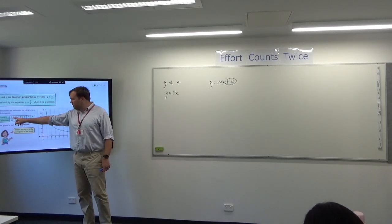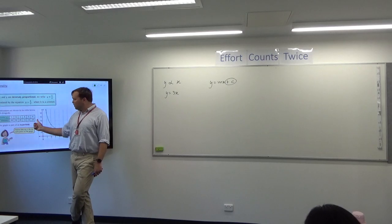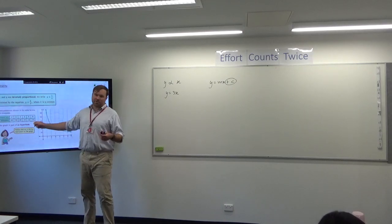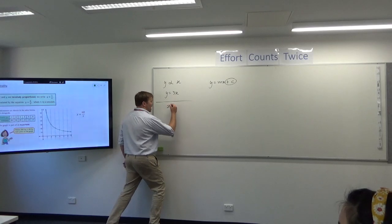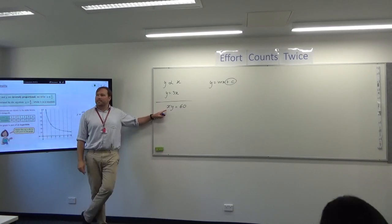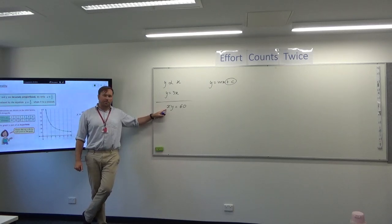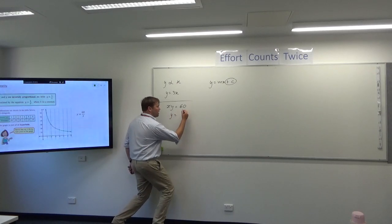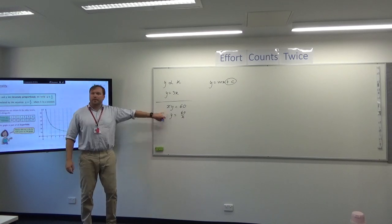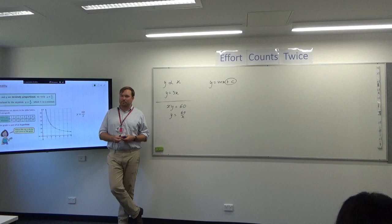And what you might notice is if you multiply the pairs of numbers together, you always get the same result. So things that are inversely proportional, the pairs will always multiply to the same thing. So one way we can express this equation is xy equals 60. So that graph there could easily be described as xy equals 60. We don't tend to like graphing things like that. Our calculator prefers we put y on its own. So normally you'll see it as y equals 60 on x. We divide both sides by x. But both of those would be an acceptable equation for this particular graph.